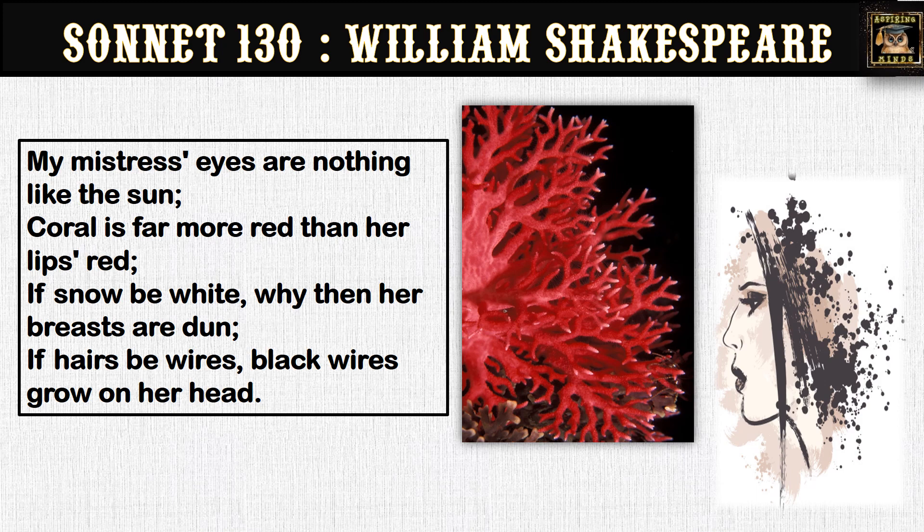In the second line, the speaker compares his mistress's lips to coral — a precious, vibrant red substance — but claims that coral is in reality much more red, and the color of the lover's lips is not as red as coral. Next: 'If snow be white, why then her breasts are dun.' The speaker questions the comparison of his mistress's breasts to snow, asserting that they are not white but rather dun — a dull, grayish-brown color.